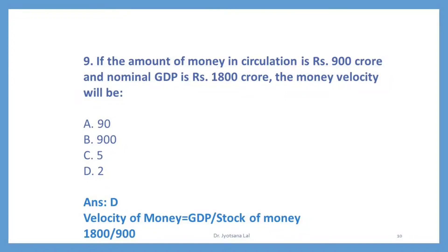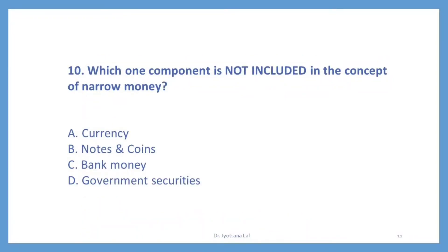Question number 10. Which one component is not included in the concept of narrow money? Narrow money is the traditional concept of money supply, while broad money is the modern concept. Option A — currency — is part of narrow money. Option B — notes and coins — is also part of narrow money. Option C — bank money — is also part of narrow money. Option D — government securities — is not part of narrow money; it is part of broad money. So the correct option is D.